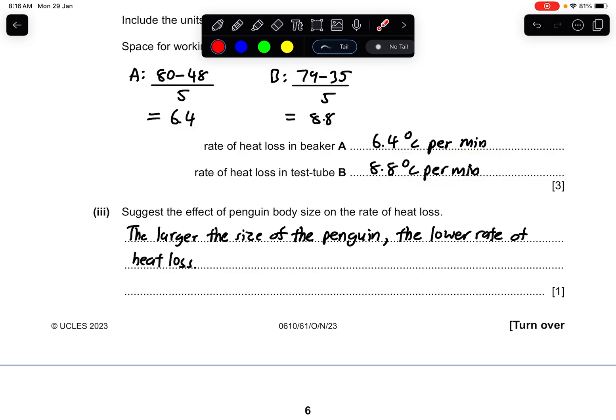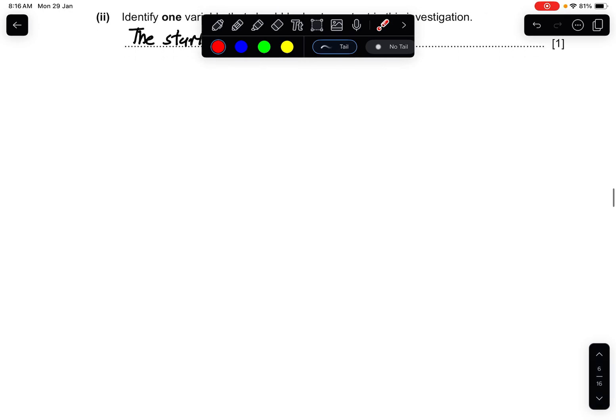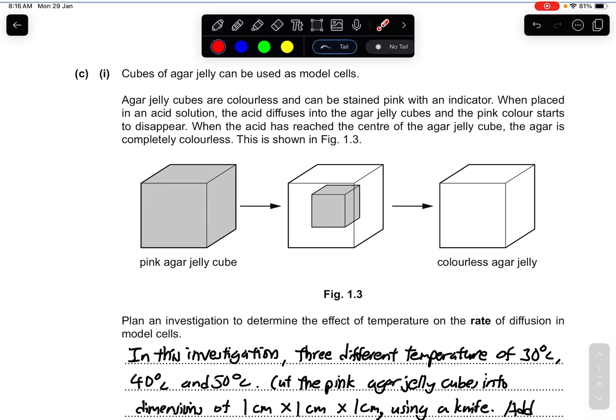Part three: suggest the effect of penguin body size on the rate of heat loss. Of course, the larger the surface area or the larger the size of the penguin, the lower the heat loss would be. Part one: identify the independent variable in this investigation - the size of the container. Part two: identify one variable that should be kept constant in this investigation - the starting temperature of the water.